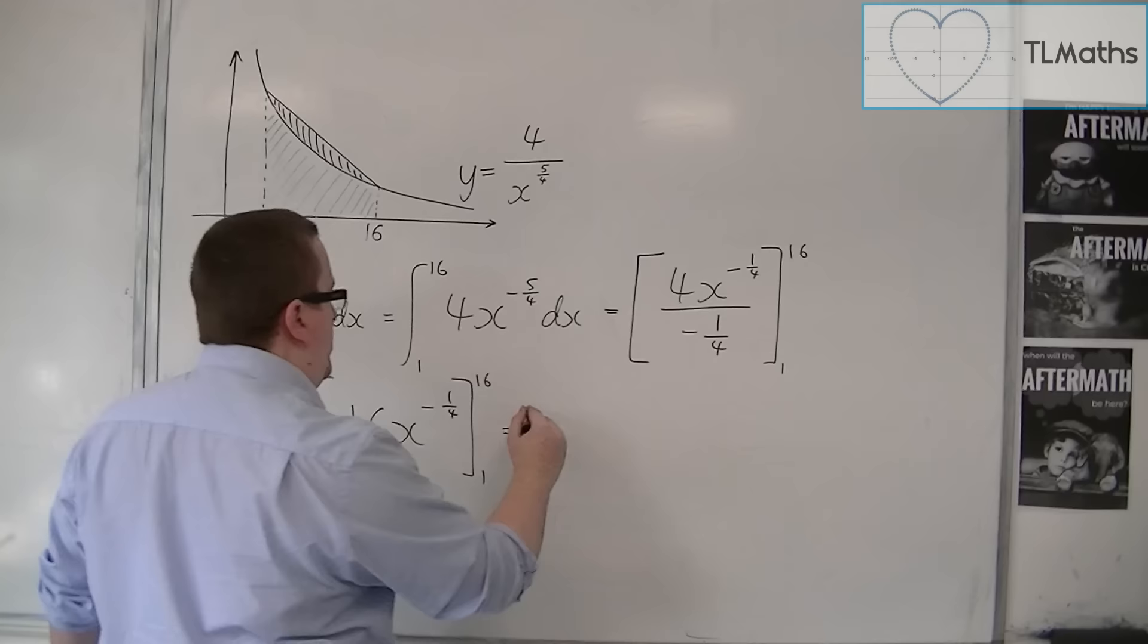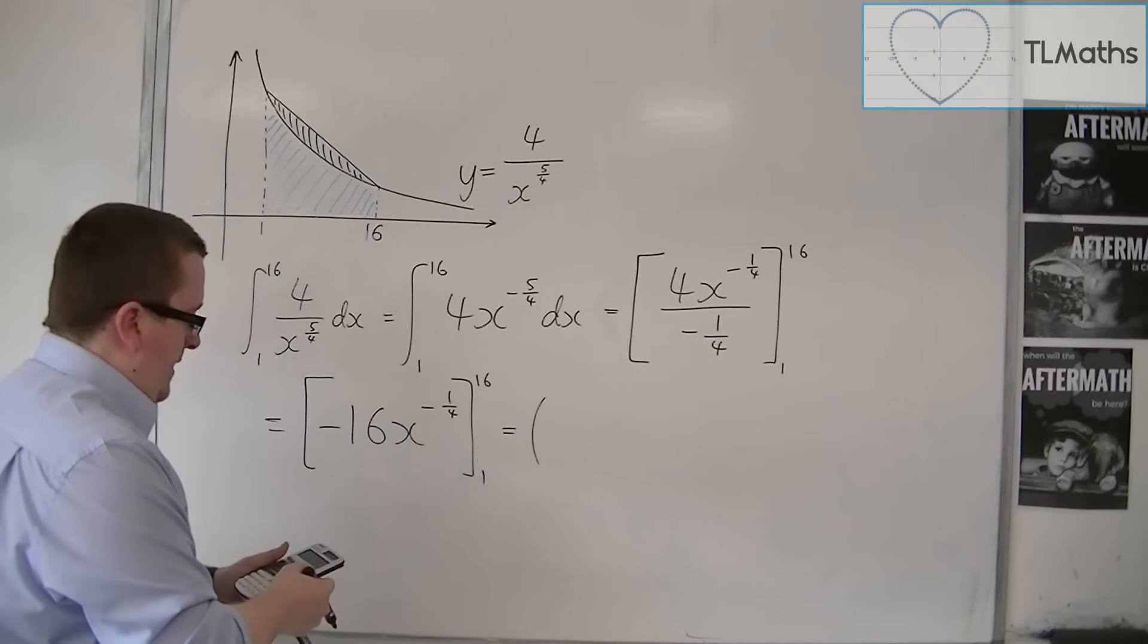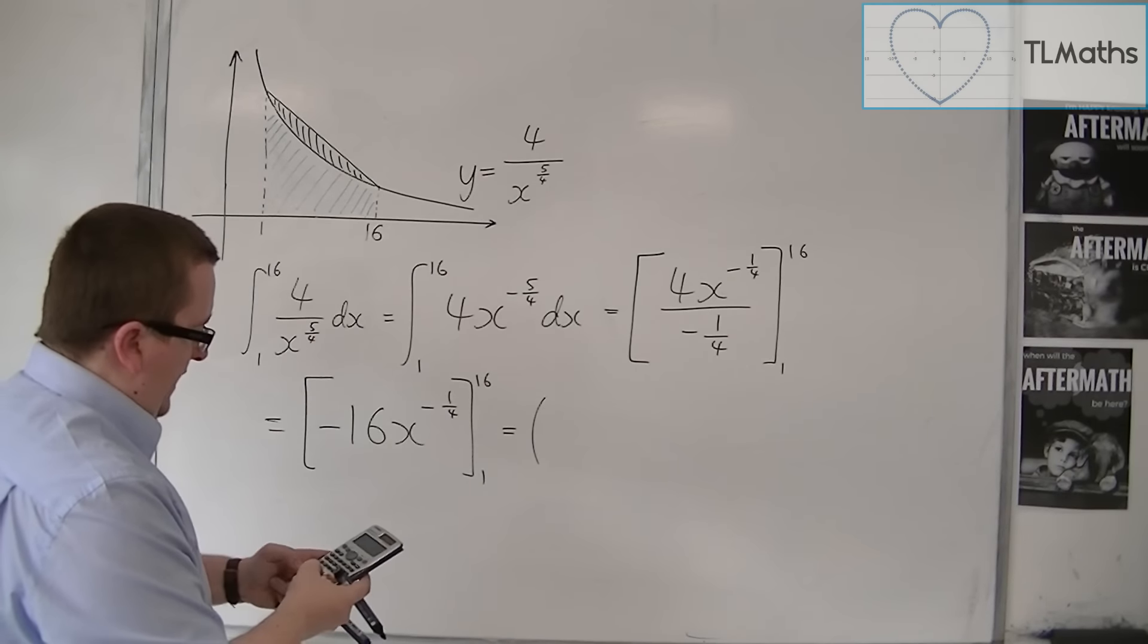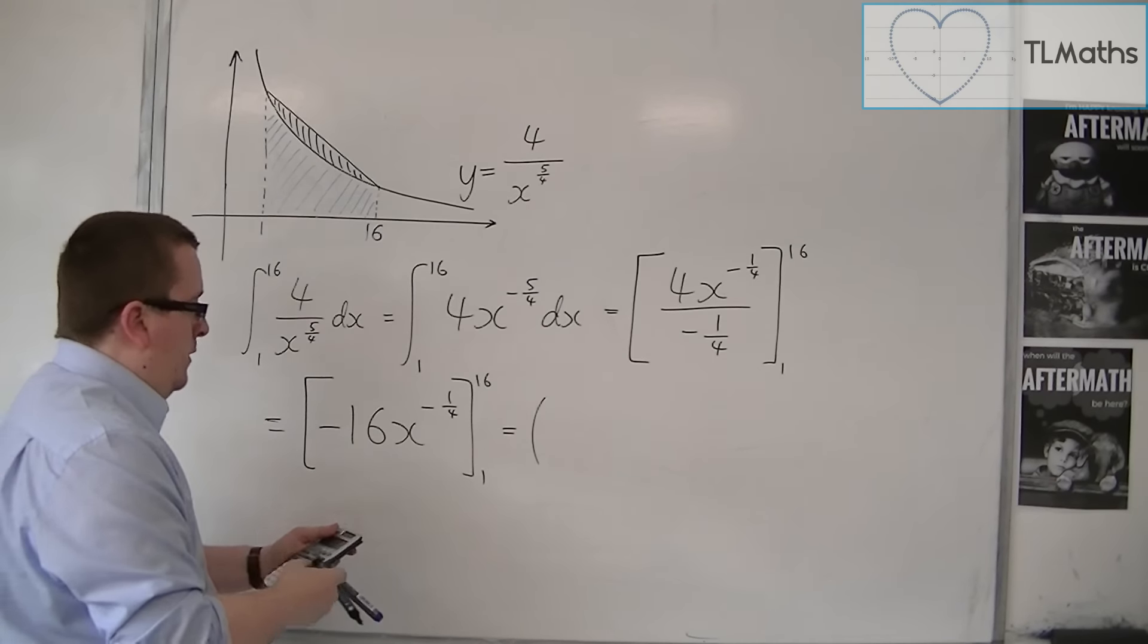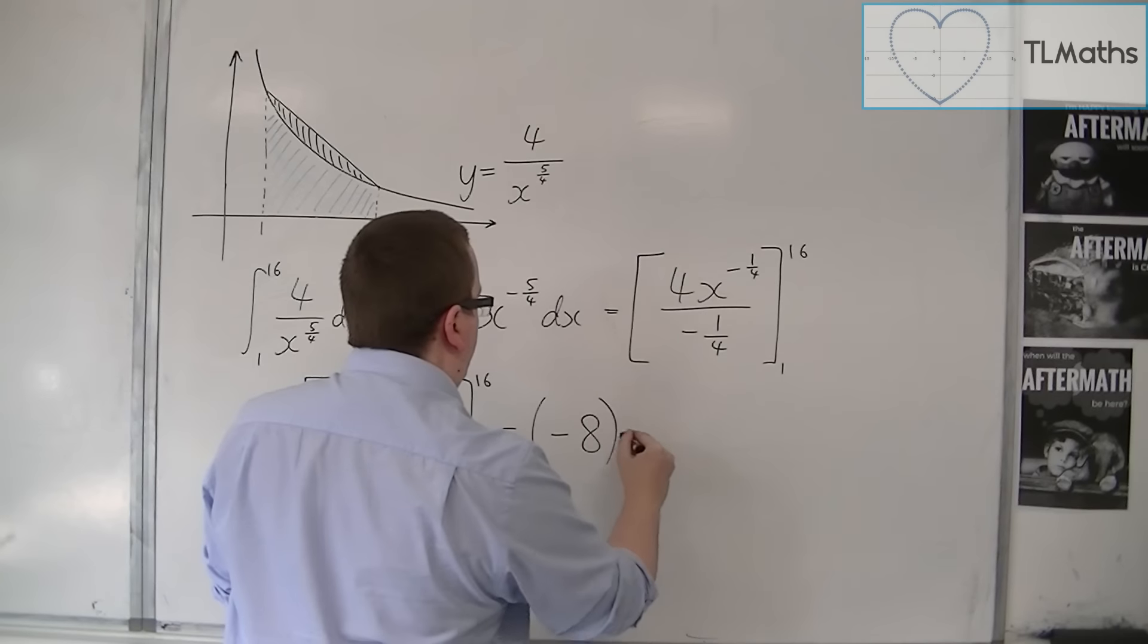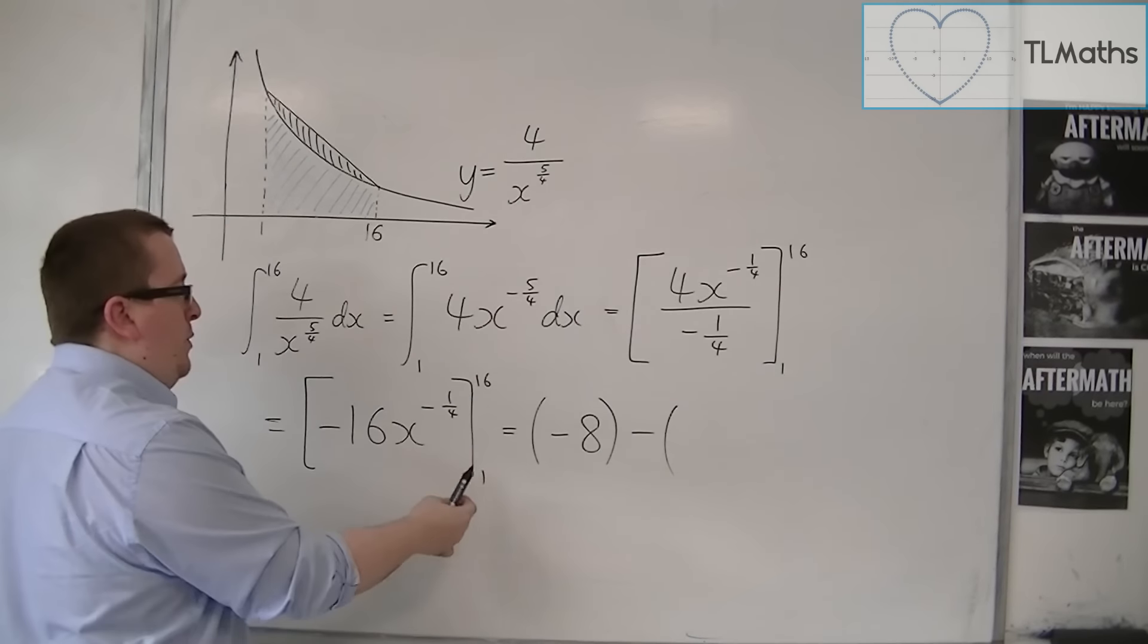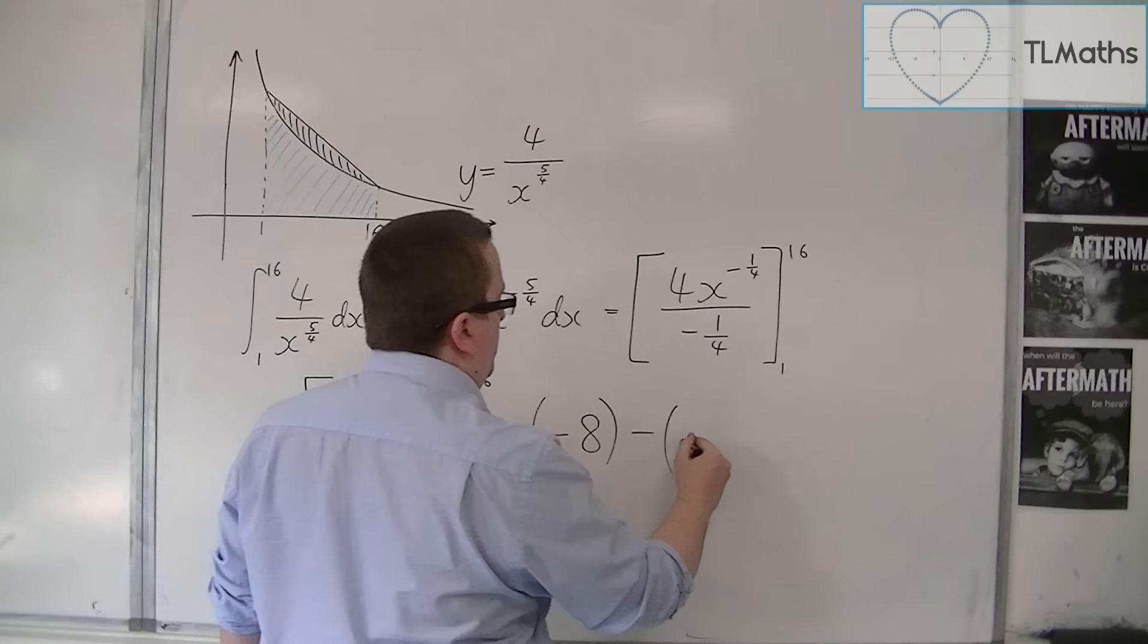So we're going to substitute 16 in first, OK? So we get minus 16 times by 16 to the power of minus a quarter, which is minus 8. Then I substitute in 1, I get minus 16 times 1, so just minus 16.